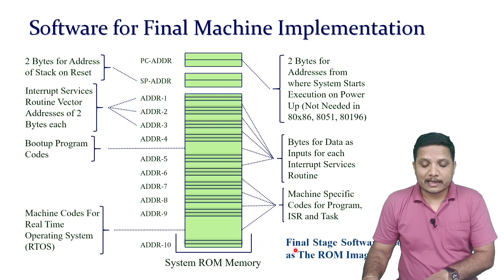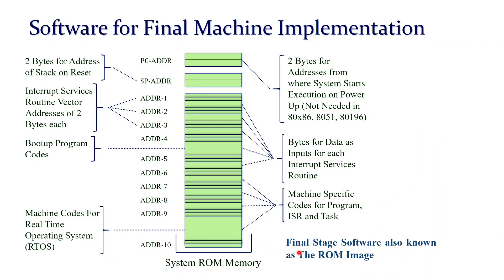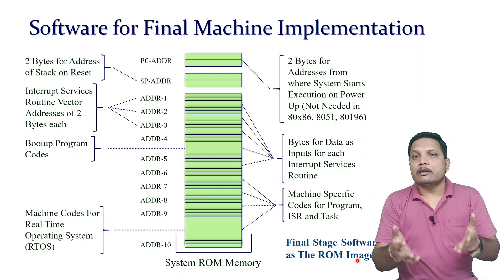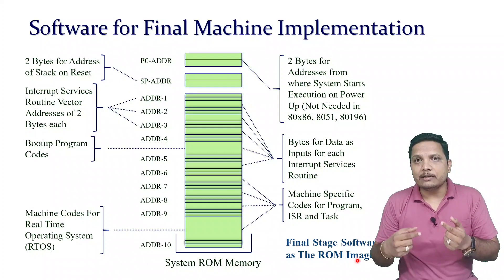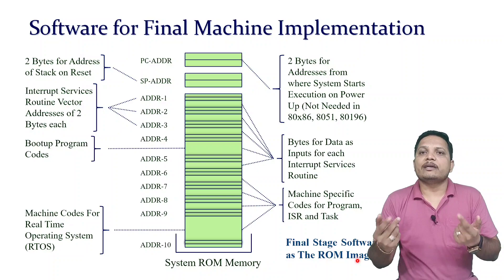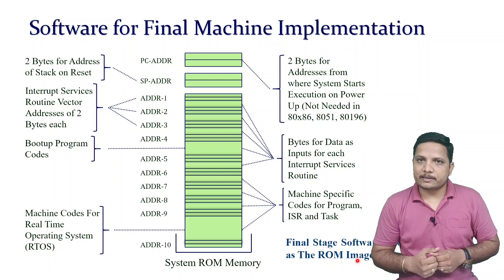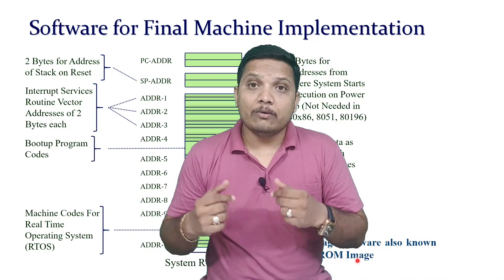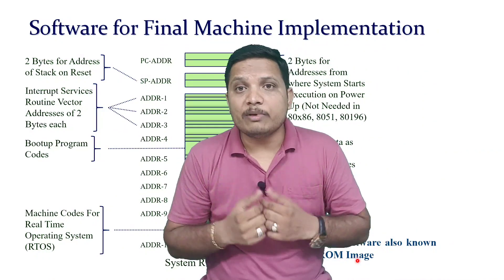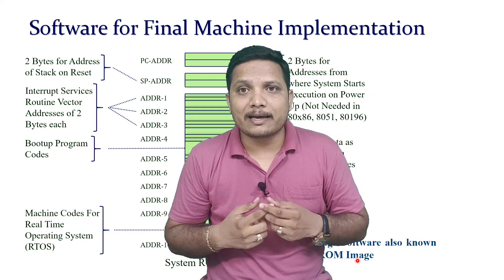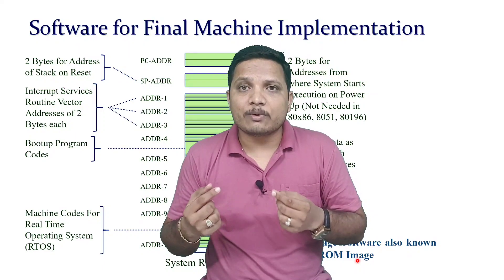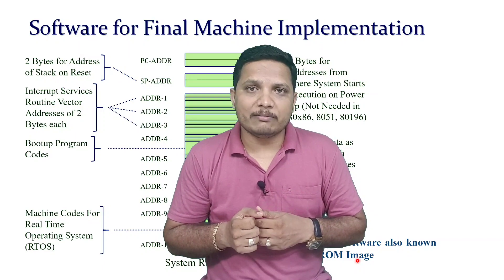In general, if you observe this ROM data, there are different types of data: interrupt service routine, boot-up program, and machine codes for different embedded programs. This is what the final stage software is, and it is referred to as the ROM image. Once we have the final stage, we can load that into ROM and run that program with our embedded system.